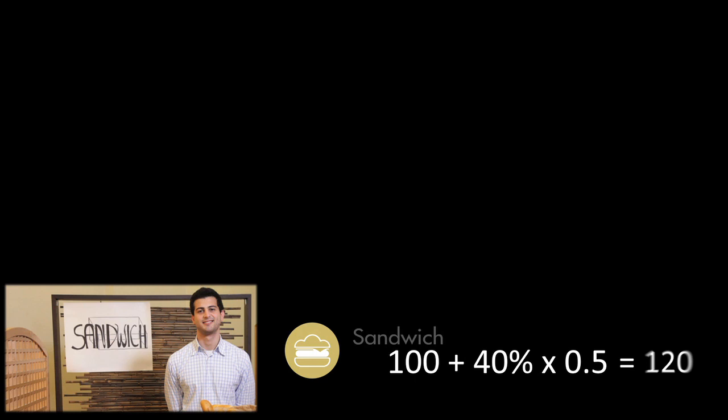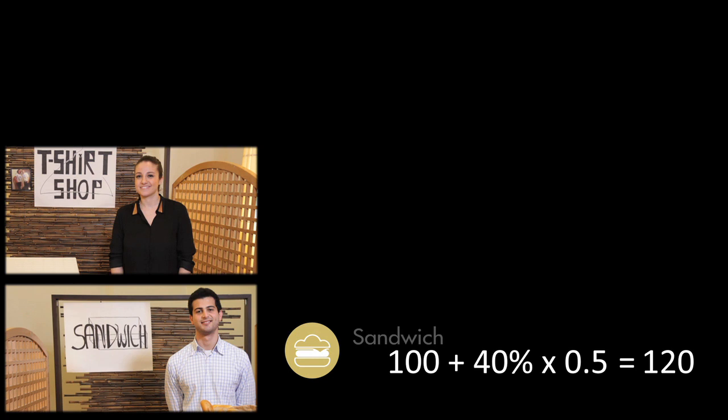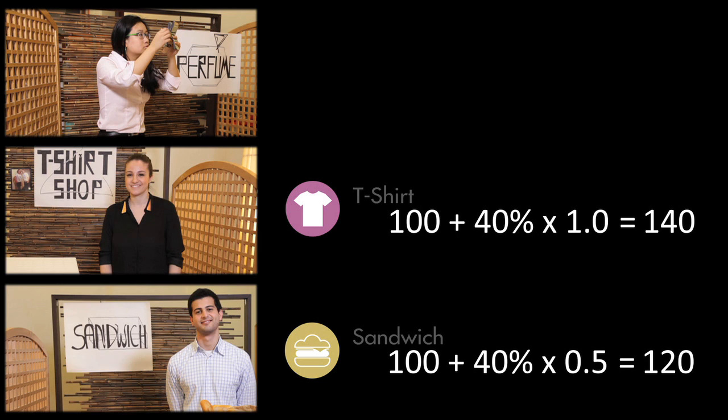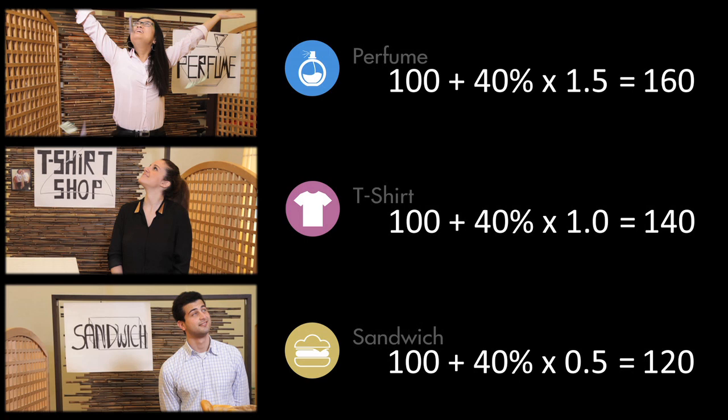Let us recap. Pierre has a beta of 0.5. In a market growing by 40%, he will sell 20 sandwiches more — that is plus 20%. Penelope's product reacts like the market since her activity has a beta of 1. In a market growing by 40%, she will sell 40 t-shirts more — that is plus 40%. Liane's product overreacts compared to the market since her activity has a beta of 1.5. In a market growing by 40%, she will sell 60 perfumes more — that is plus 60%.